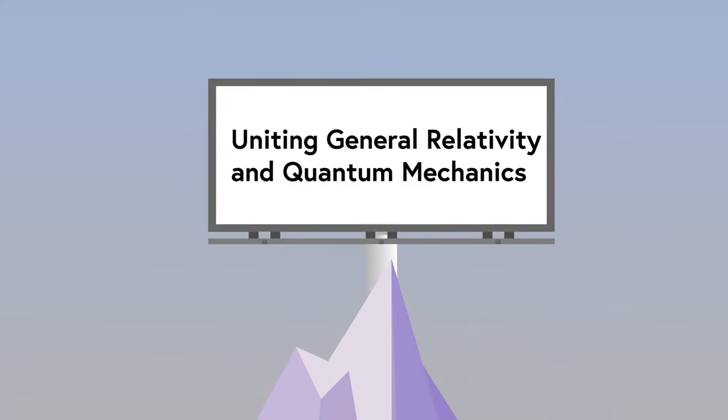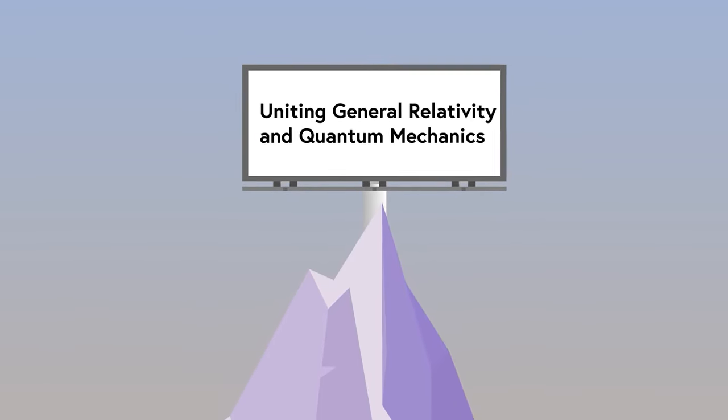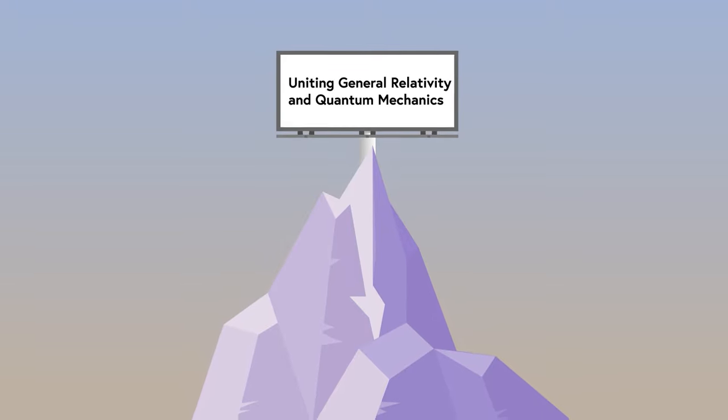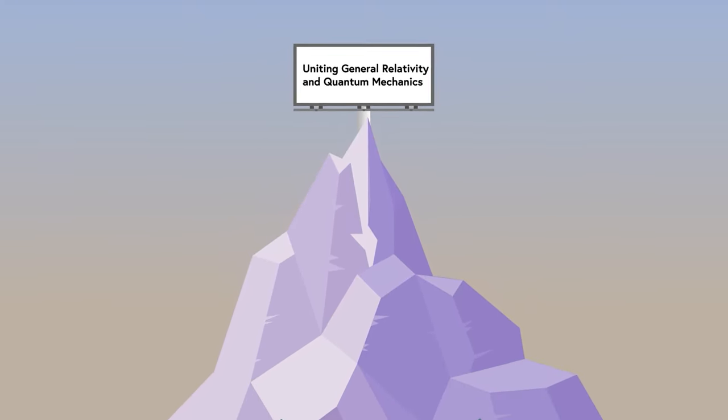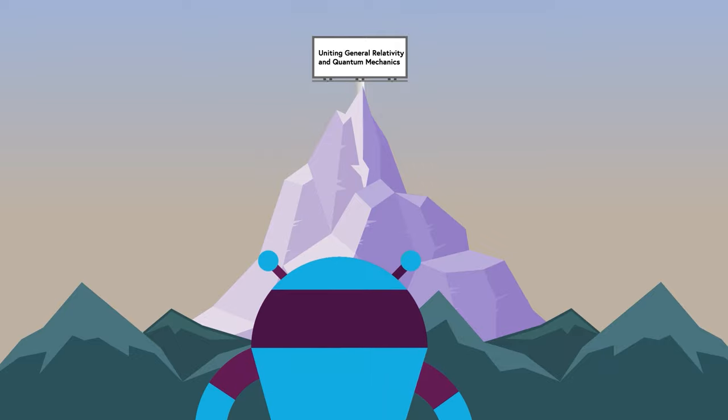At the end of the day, what you need to take away from watching this is that trying to unite general relativity with quantum mechanics is not going to be an easy feat. The issues we listed in this video are just scratching the surface of the mountains we have to climb to reach the theory of everything.